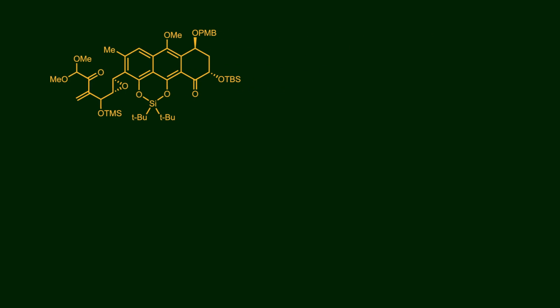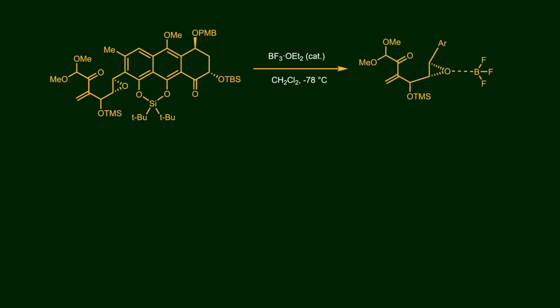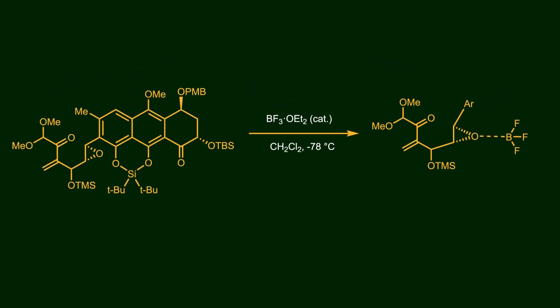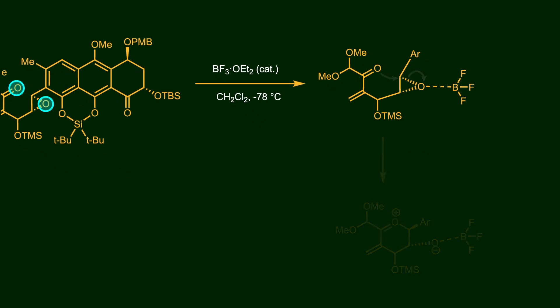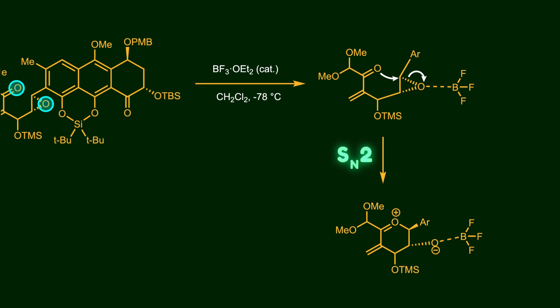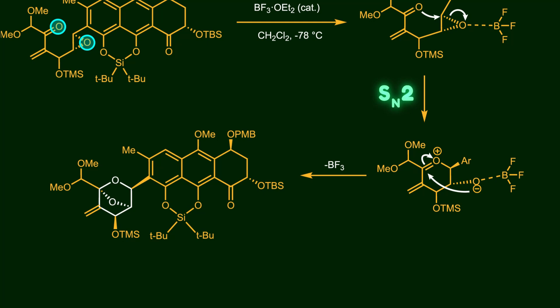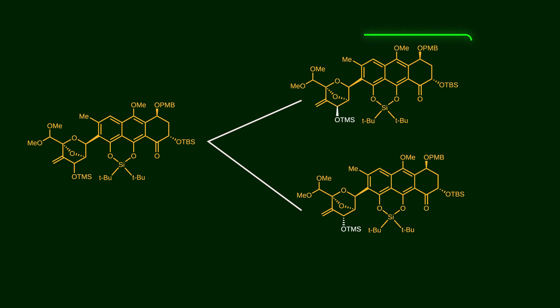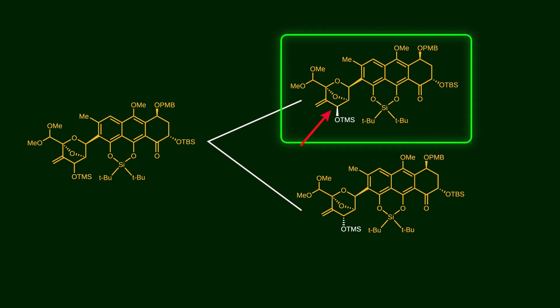In the next sequence, we're going to create the bicyclic ring. Boron trifluoride etherate is added — notice that there are two oxygen atoms that can coordinate to the Lewis acid, but it selectively activates the epoxide ring. After that, the carbonyl group attacks the epoxide to create the six-membered ring through an SN2 mechanism, giving inversion of stereochemistry at this carbon atom. Finally, the negatively charged oxygen attacks the carbon atom to construct the bicyclic core. At this stage, the two epimers are separated and they continue with the desired stereochemistry.